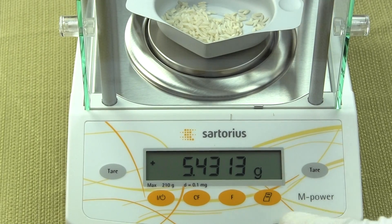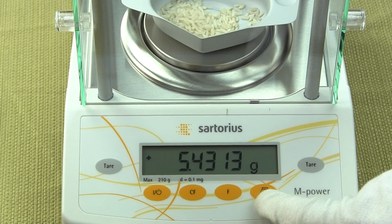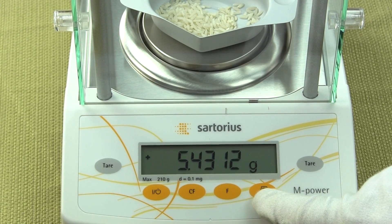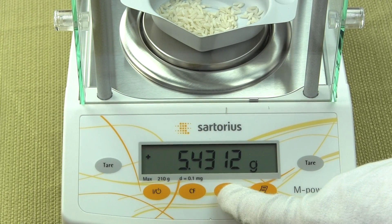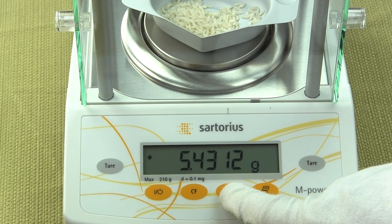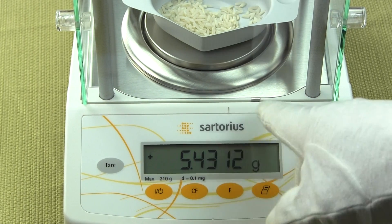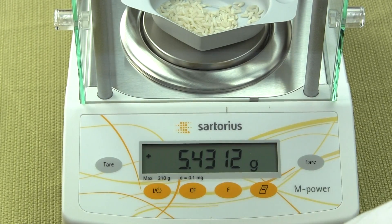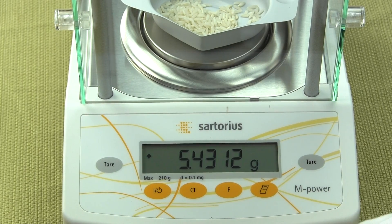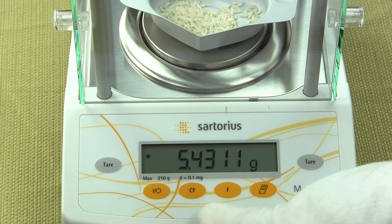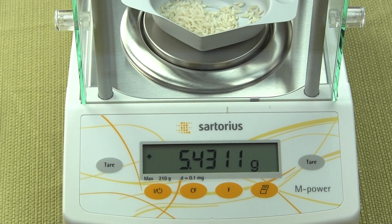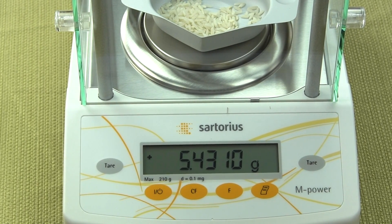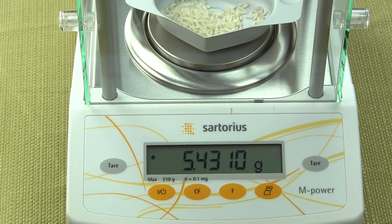You do have here on the right hand side the print key. If you were to purchase the balance with an optional printer, the F key is the function key. If you set this balance up for multiple weigh modes, you would just press the F key and it would switch. The default of this balance from the factory is grams only. And the CF is just the clear function altogether. If you're in a function like parts counting mode, the CF would clear that for you.